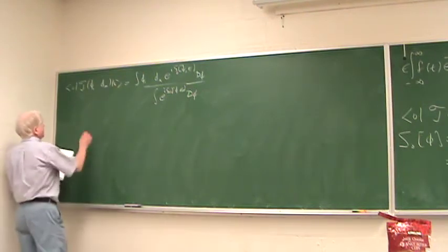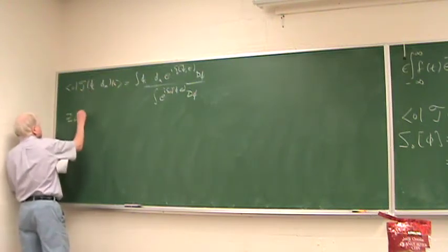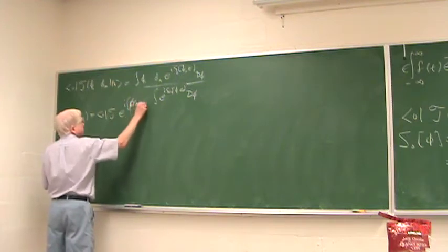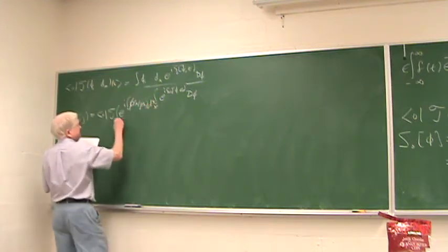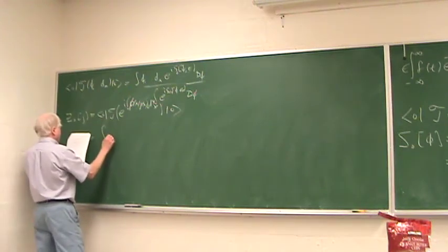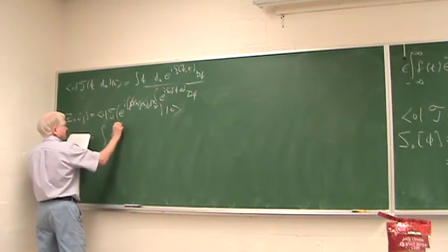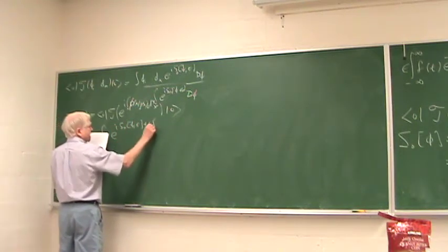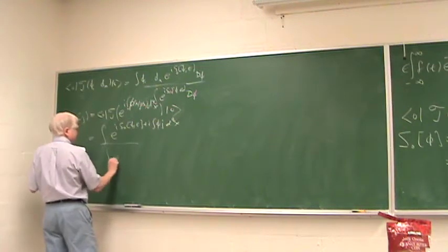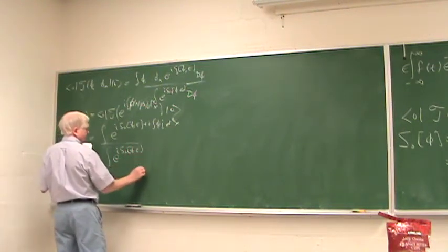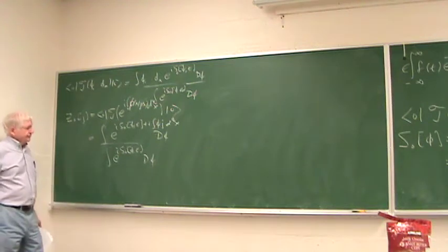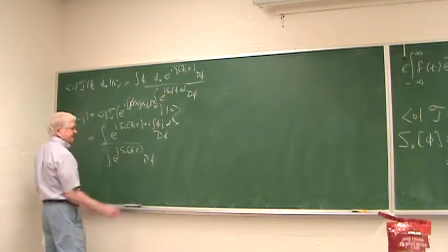In particular, the time-ordered product of fields phi_1...phi_n in the free-field vacuum is an integral over phi of phi_1...phi_n times e to the i S[phi] d-phi, divided by the integral of e to the i S_0[phi, epsilon] d-phi. A specific example is Z_0[j], which is the vacuum time-ordered product of e to the i integral phi(x) j(x) d⁴x, given as the ratio of e to the i(S_0[phi, epsilon] + i integral phi j d⁴x) d-phi divided by e to the i S_0[phi, epsilon] d-phi.